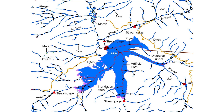The NHD represents the nation's surface water drainage network and related features. These features include rivers, streams, canals, lakes, ponds, glaciers, coastlines, dams, and stream gauges.